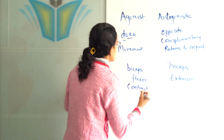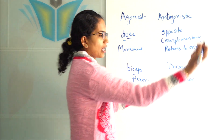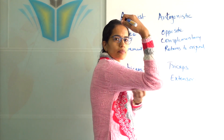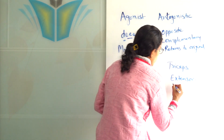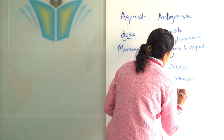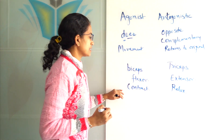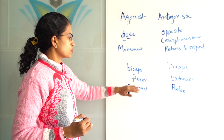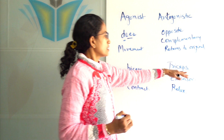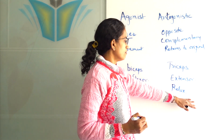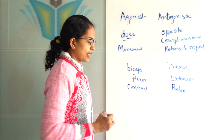The bicep is the doer muscle doing the action, and at the same time the lower muscle — which is the tricep — would relax. So there is contraction of the biceps, known as the flexor muscle, while the tricep, which is the extensor muscle, would relax at the same time.